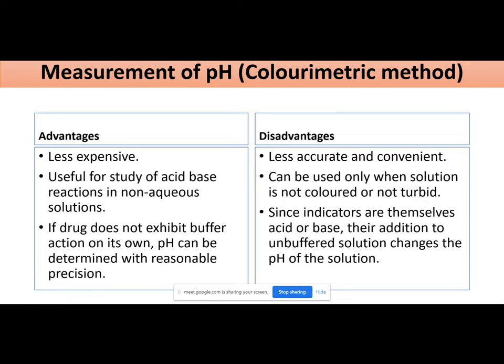If you have an unknown test sample, you will add buffers from pH 1 to 11 — all different buffers from pH 1 to 11, i.e., 1, 2, 3, 4, 5, 6, 7, 8, 9, 10, and 11. Then you will add universal indicator to each. Once you have set a standard solution, you will take your test sample, add universal indicator, and find the approximate value from it.